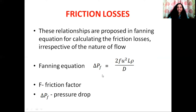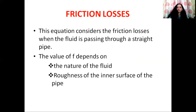Here, delta PF represents the pressure drop and F is the friction factor. Whether it is turbulent or laminar flow, it is not a problem — we can use this fanning equation to calculate the friction losses. But this fanning equation is valid only when the fluid is flowing through a straight pipeline. The friction factor F depends on the nature of the fluid and the roughness of the inner surface of the pipe.